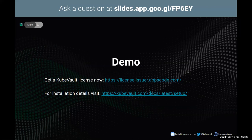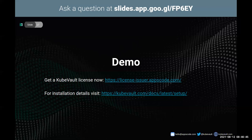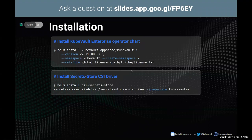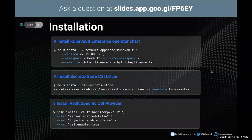Before moving to the demo, here are a couple of links. You can get your KubeVault license — the community version or even the enterprise version — from the provided link, and use the link below for installation. The community version currently supports only the default namespace, but if you want to use any namespace you'll need a license. To get started with the demo, you need to install the KubeVault enterprise operator, the SecretStore CSI driver, and the Vault-specific provider for the SecretStore CSI driver.